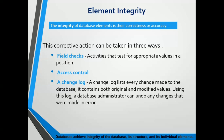A database achieves integrity of its structure and individual elements. This corrective action can be taken in three ways. The DBMS can apply field checks for appropriate values — a field might be required to be numeric, uppercase letters, or from a set of acceptable characters. A check ensures that a value falls within specified bounds or is not greater than the sum of values in other fields, preventing simple errors as data are entered.